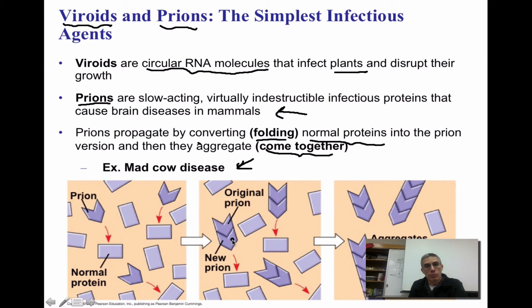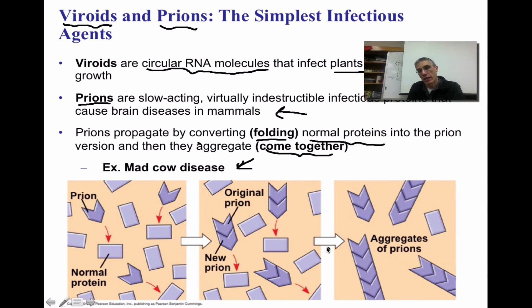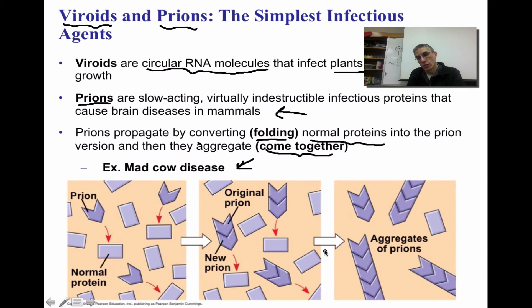Prions are going to be propagated by actually converting or folding normal proteins in that individual into the prion version, and then they're going to aggregate or simply come together — and that's what causes the disease in these mammals. The diagram shows the normal proteins in that individual, and the prion alters or changes the shape of that protein so it becomes the new prion. As it continues in this cycle, it aggregates these prions, and when they begin to aggregate, that's when you get the outcome of the disease.